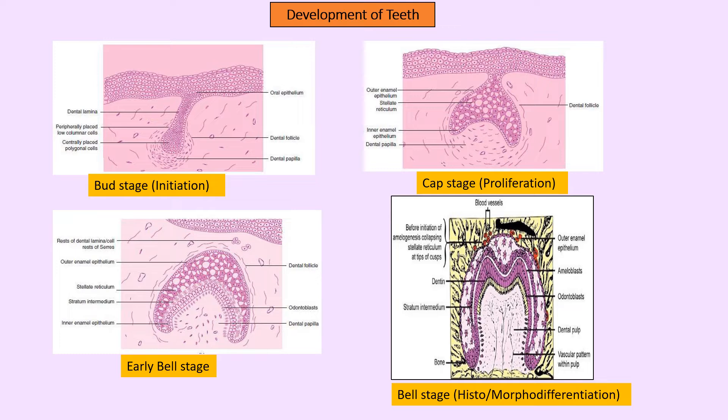Next to the inner enamel epithelium you have the dental papilla, which gives rise to the dentine and pulp of the future tooth, and surrounding the cap you have the dental follicle that gives rise to the PDL, cementum, and bone. In the bell stage there are four layers in the enamel organ: inner enamel epithelium, outer enamel epithelium, stellate reticulum, and one more layer called stratum intermedium.